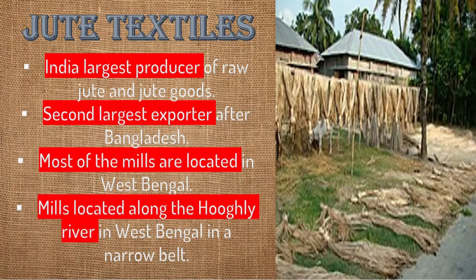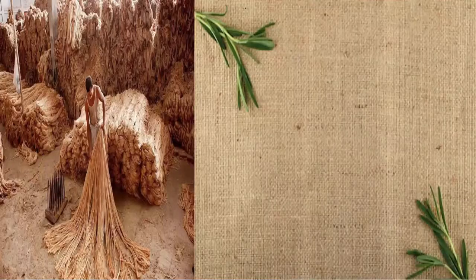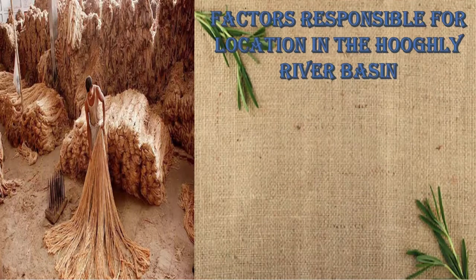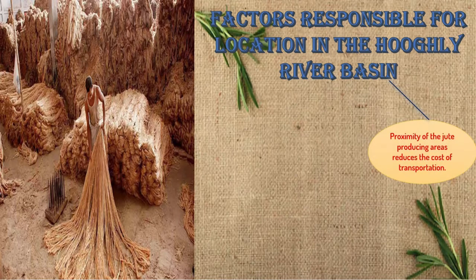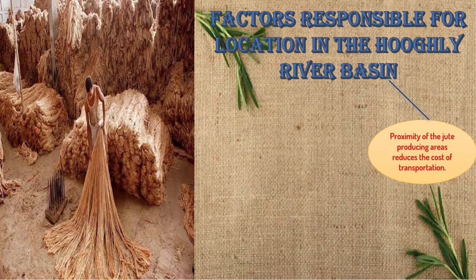Now let us find out which factors are responsible for the location of jute mills in the Hooghly basin. The first factor is proximity of the jute producing areas — proximity means close by. Jute is produced around the Hooghly basin, and this reduces the cost of transportation.